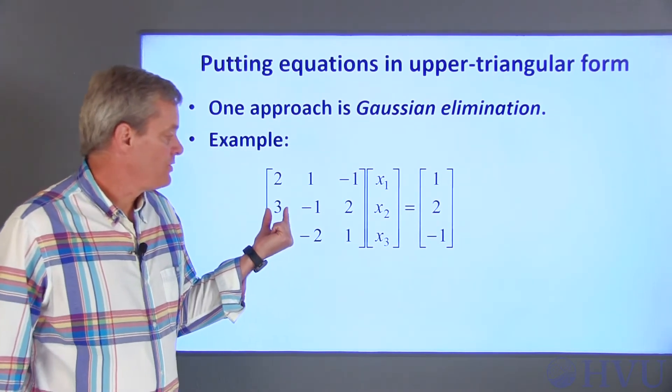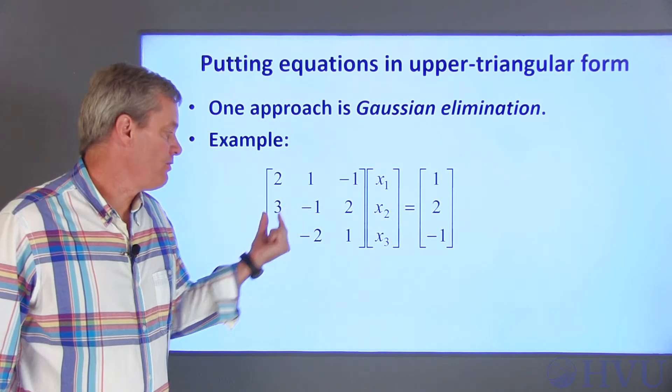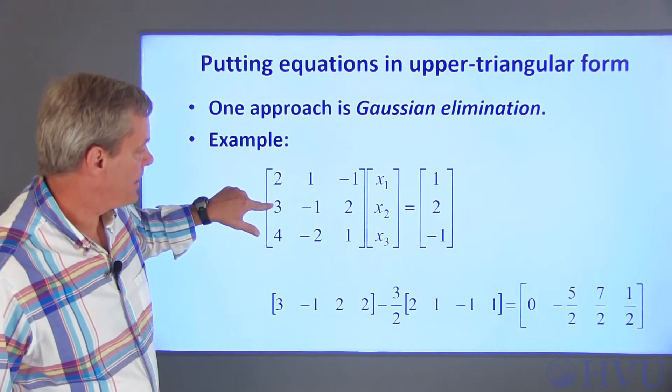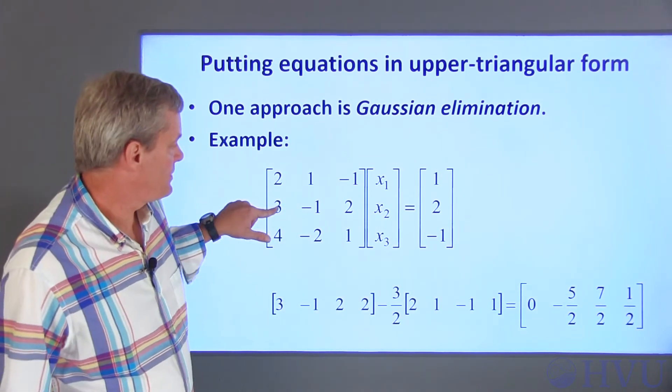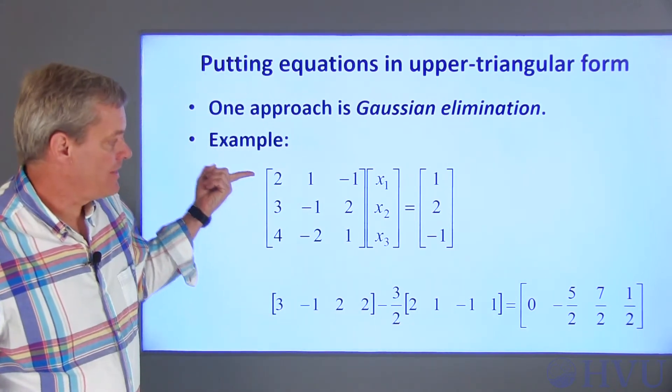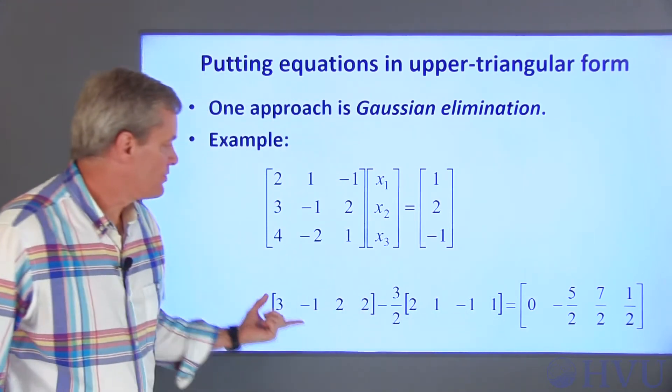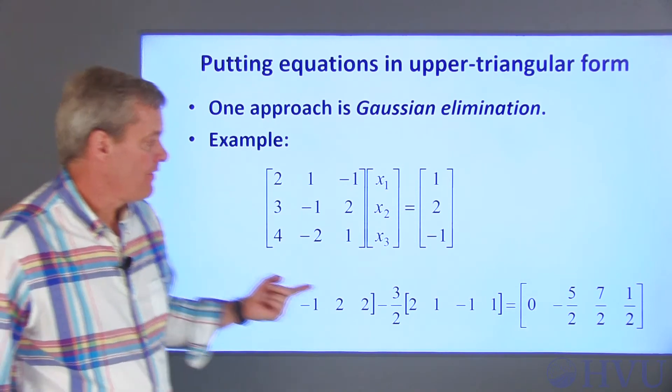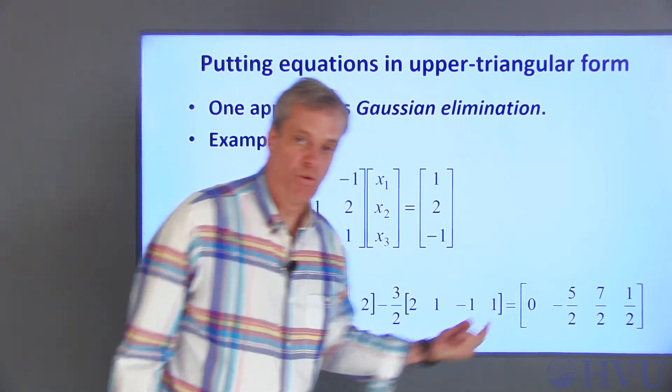The first thing I'll do is place a zero at this point in the array. I can do that by dividing 3 by 2, this element by this element, multiplying it by this row, and then subtracting that from this row. That will create a zero at this point.